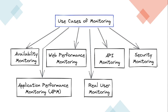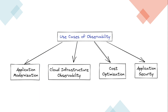Use cases for monitoring include availability, web performance, API monitoring, security monitoring, application performance monitoring, and real user monitoring. Use cases for observability include application modernization, cloud infrastructure observability, cost optimization, and application security.